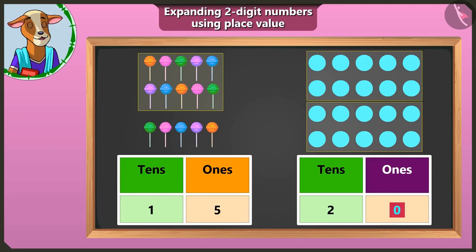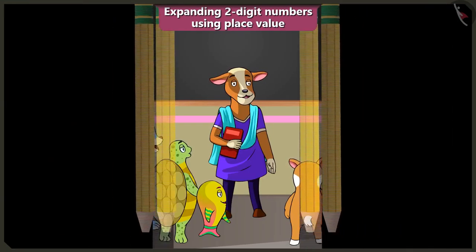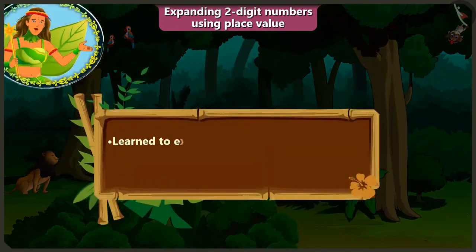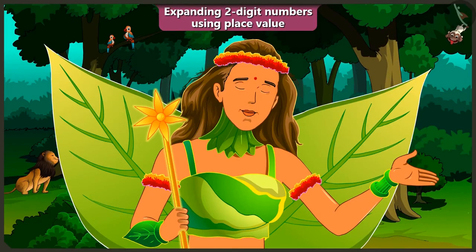In this manner. Yes, I will remember for sure, ma'am. Thank you. Very good. So children, in this video you have learned to expand two-digit numbers by using place value, which means writing in the box of tens and ones. Now, in the next video, we will understand expanding two-digit numbers using place value through examples in a better way.